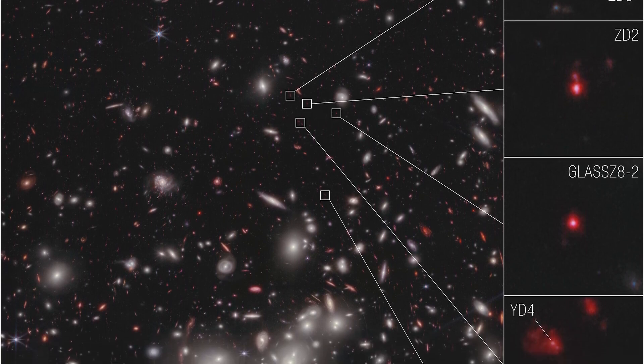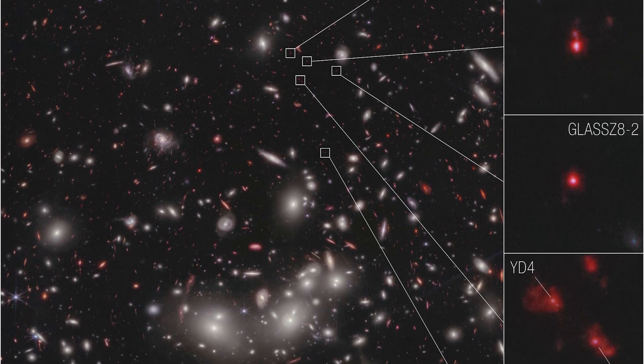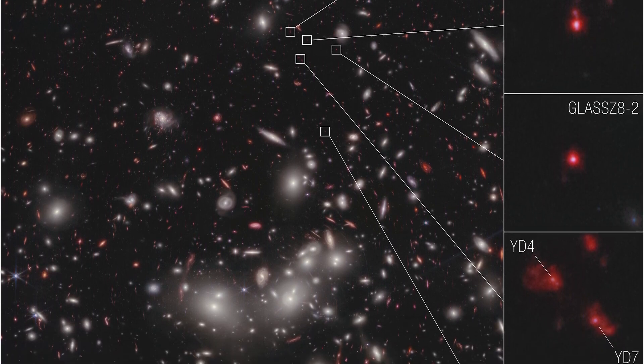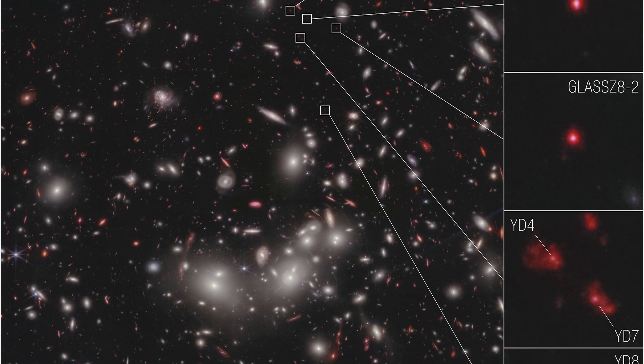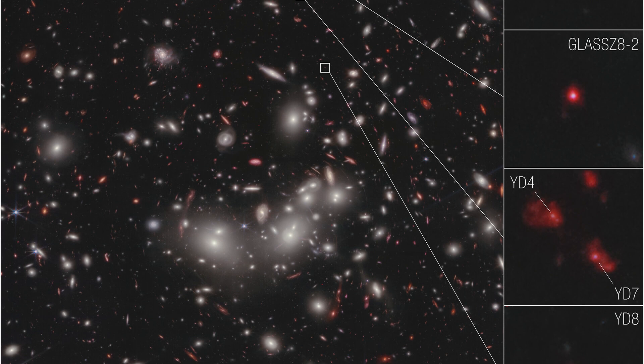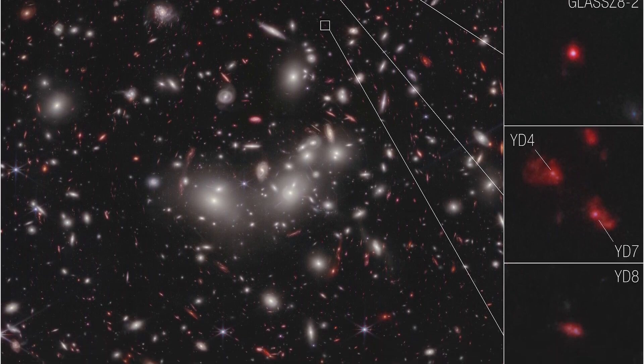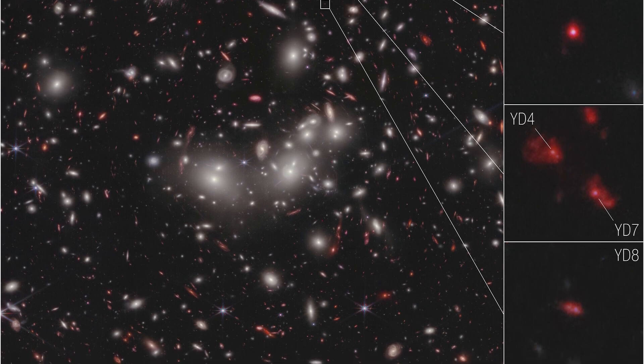Now researchers can measure the velocities of these seven galaxies, which gives them the confidence to confirm that they are bounded together in a protocluster. To put this in perspective, NASA scientists compared these distant galaxies to small drops of water in different rivers that will eventually join together to form a large, powerful river.